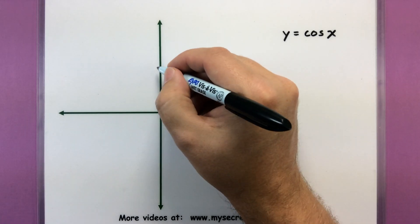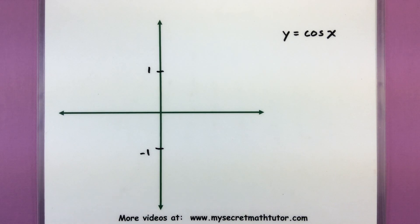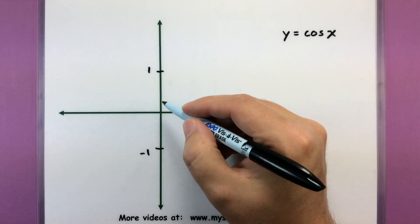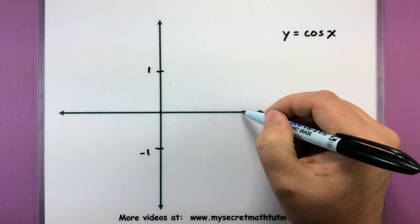Cosine is very similar. I'd still start off with a maximum value of 1 and a minimum value of negative 1. Like before, I'd start marking some key values on the x-axis. I like to think of one period as starting at 0 and then stopping at 2 pi.